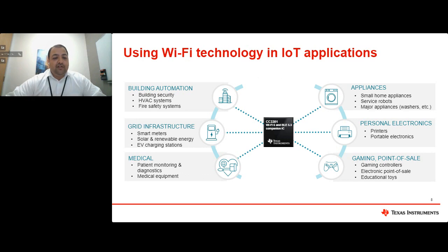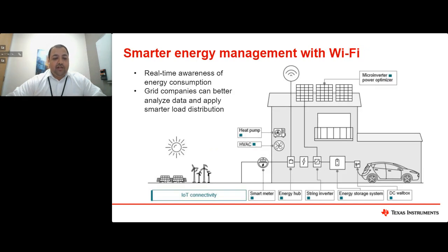Because of its cost-effective design and secure, reliable performance, this device can be used in a variety of applications ranging from smart homes, building automation such as building security or HVAC and fire safety systems, to smart grid applications where devices might be deployed inside and outside the home — whether that's electricity meters, solar renewable inverters and battery storage, or EV chargers. Because of the cost-effective design, this device can also meet your price and performance needs for cost-sensitive applications like appliances, personal electronics, printers, and electronic point-of-sale.